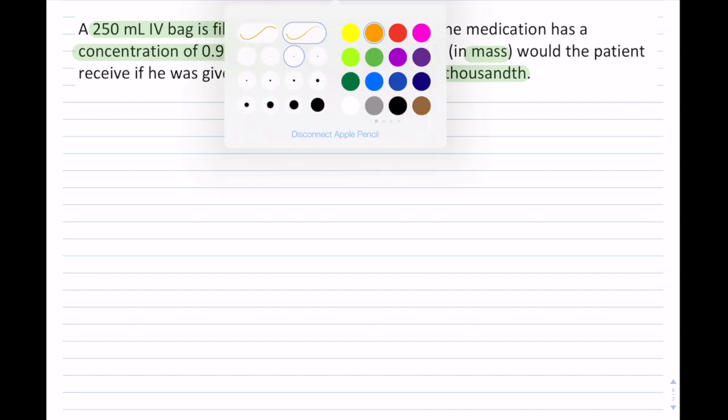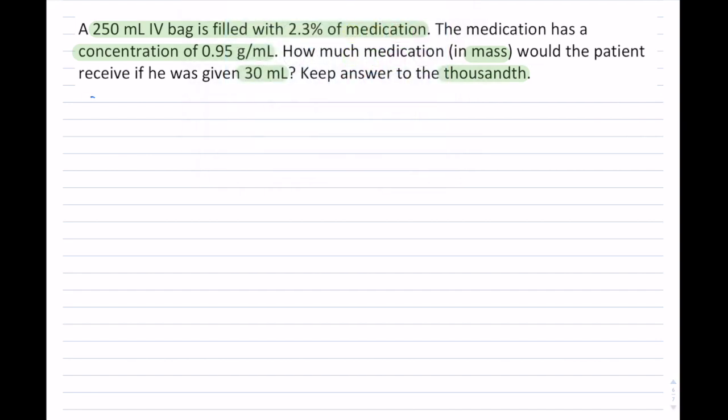So let me first write down all of these givens here. So given, we have the first given, it's a 2.3%, so 250 milliliter IV bag of medication.